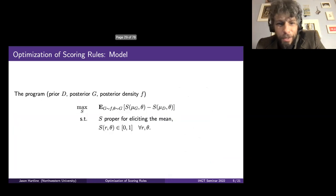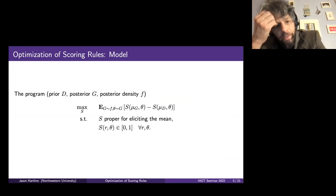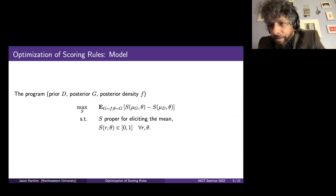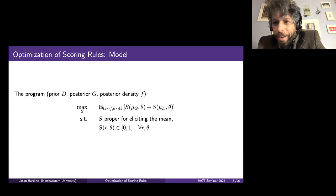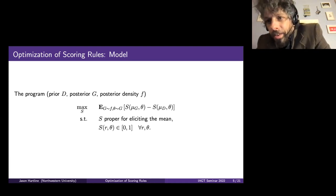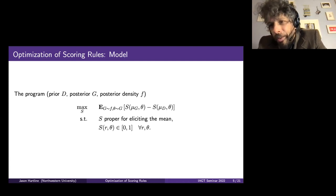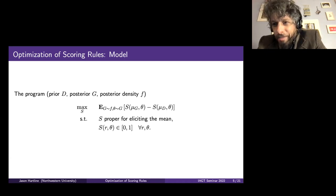A question: do we formally model the effort costs? No, we're not going to formally model effort costs. One way to think about it: if the cost of effort is drawn from a distribution, then by maximizing the incentive for effort you maximize the number of people who put in effort, because it'll be a threshold — people below some cost level will put in effort and people above it won't. If you maximize the incentive for effort, you push that threshold as high as possible.